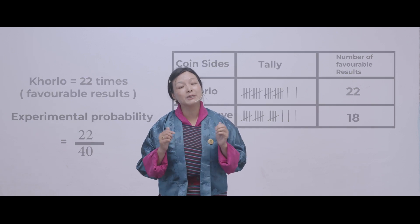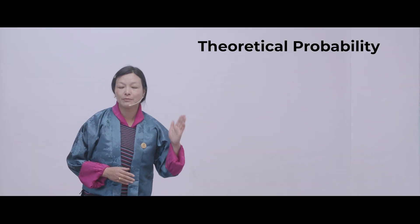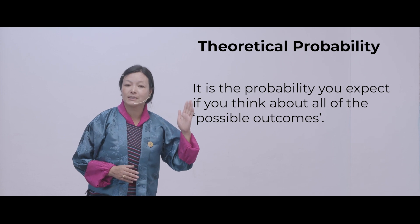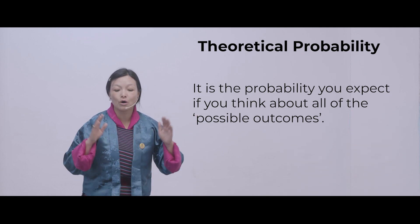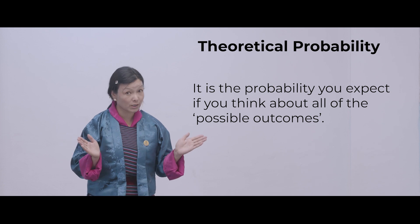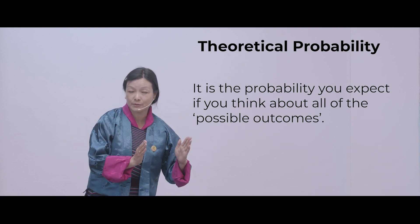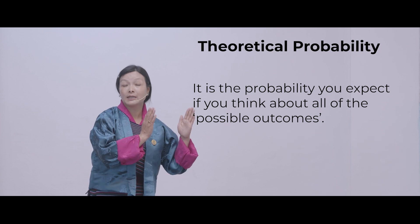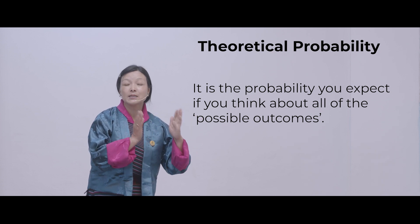Now, if you compare experimental probability and theoretical probability, you will always find them closer to each other. But the thing you need to remember is you need to do the experiment many times — then your answer will come closer to theoretical probability.